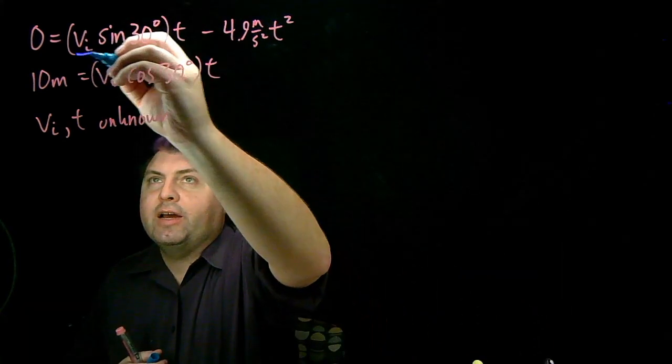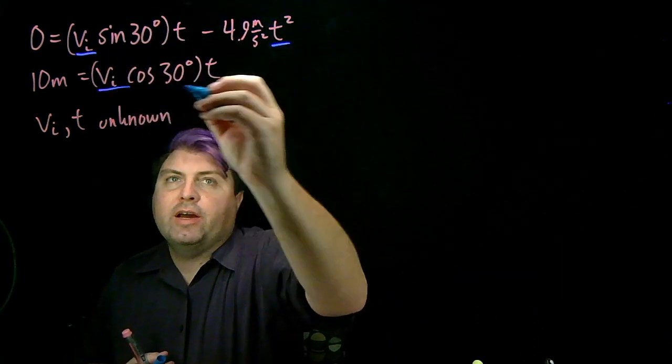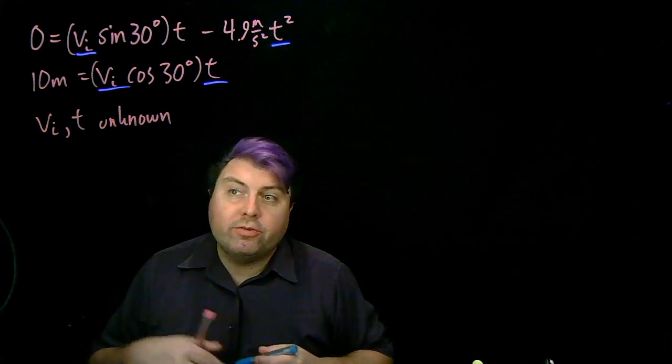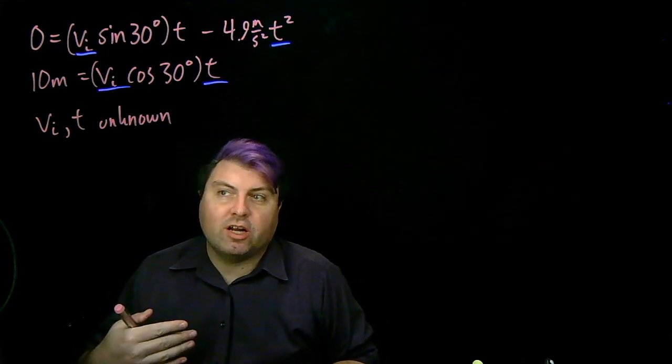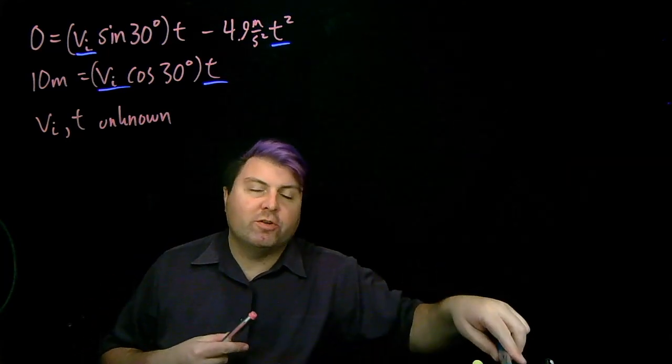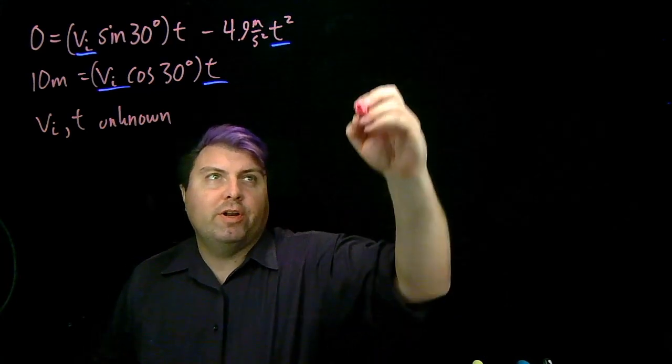We have two unknowns, our vi and our t. So we know two equations, two unknowns is solvable. We might not be sure what to do. So let's first talk about what not to do.